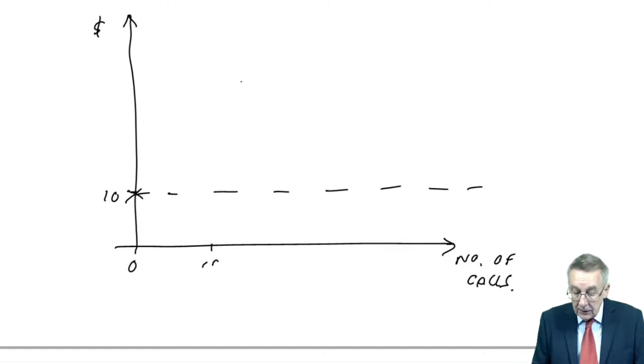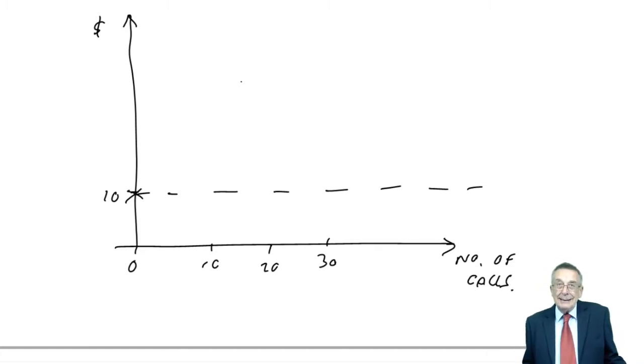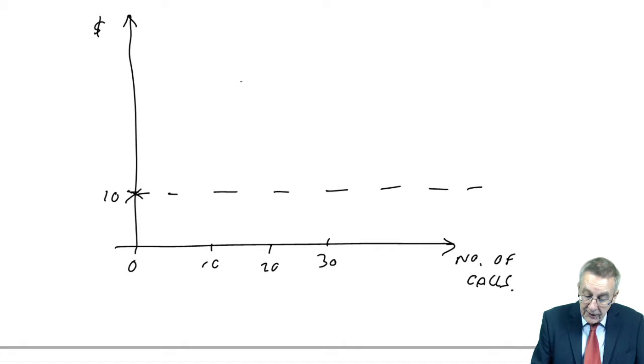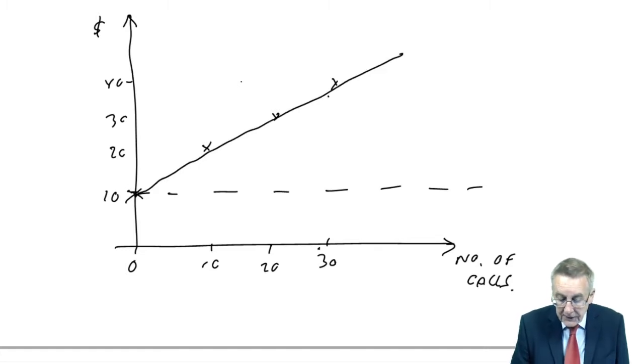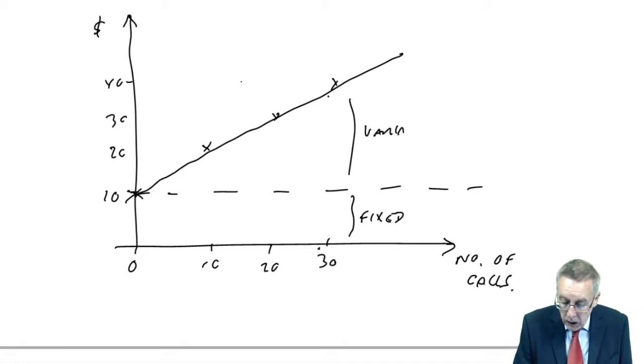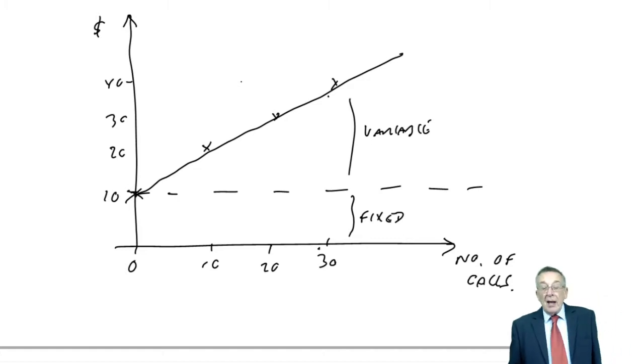But in addition, there'll be a charge per call on top of that. So, if I make no calls at all, we'll just pay $10, the fixed charge. But if I make 10 calls, 20 calls, 30 calls, well, if the cost per call is $1, then if you make 10 calls, you'll pay an extra $10, you'll pay $20. If you make 20 calls, you'll pay an extra $20. So in total, 30. If you make 30 calls, an extra $30, so you'll pay $40 in total. I think you see what I'm trying to get at. So you've got that fixed $10 whatever happens, plus a variable cost. That bit's fixed, this bit's variable, a variable cost depending on the number of calls made.